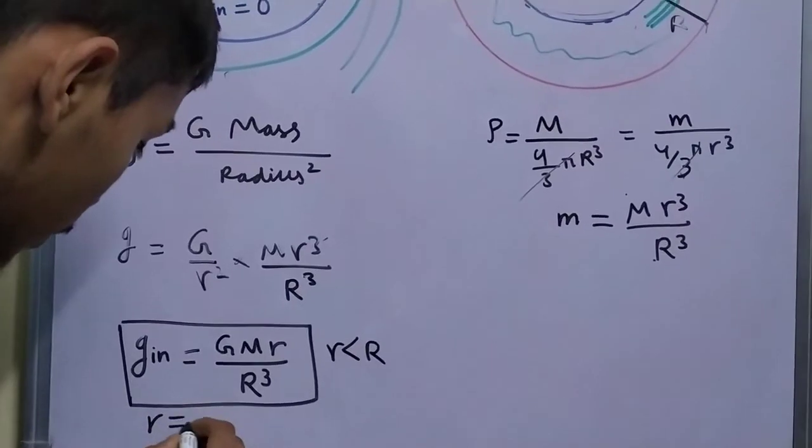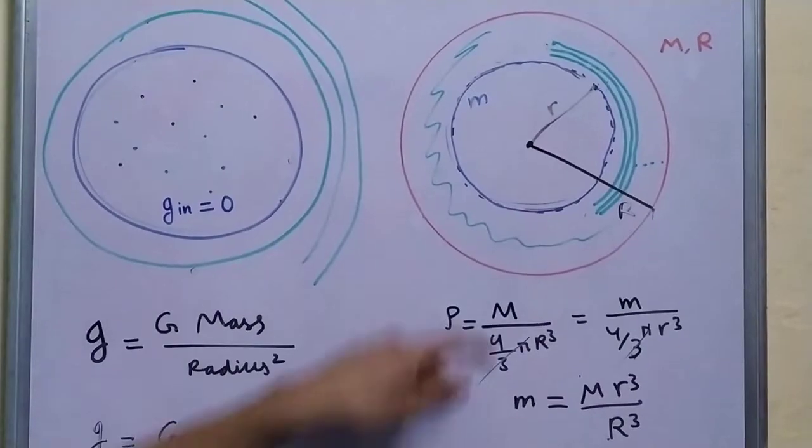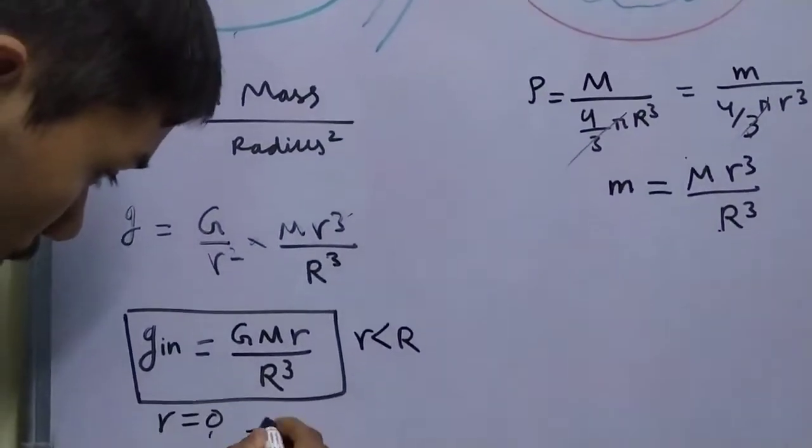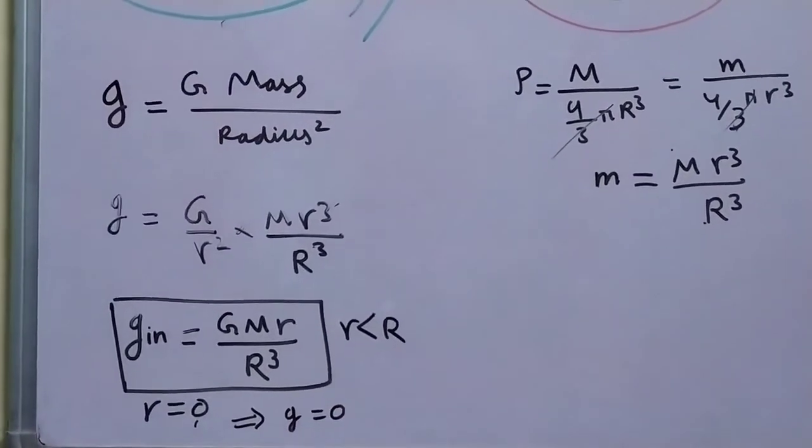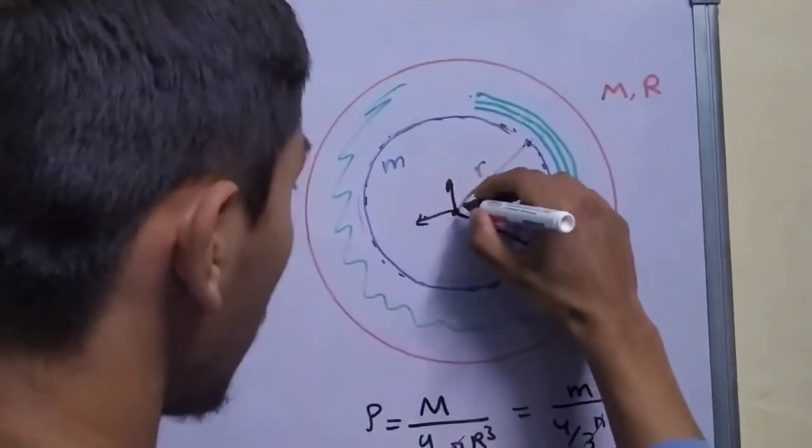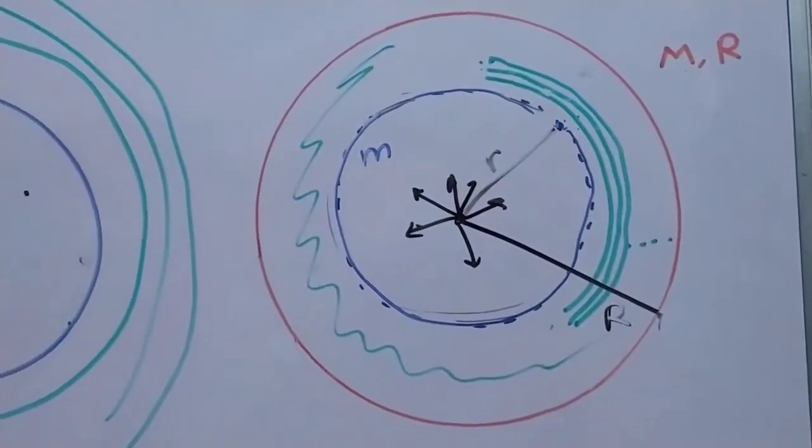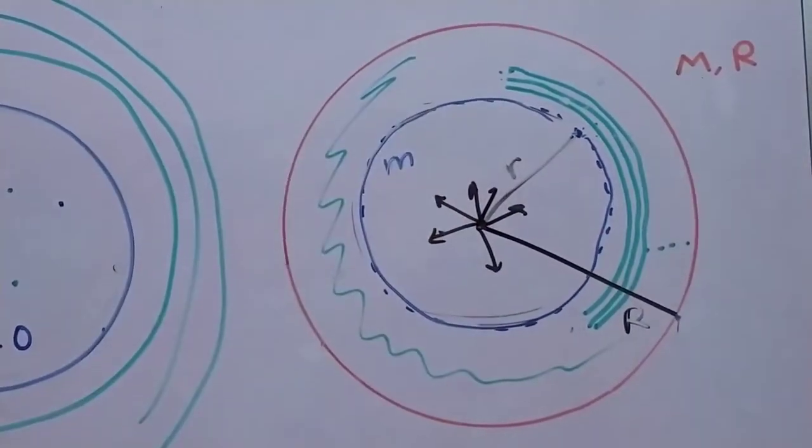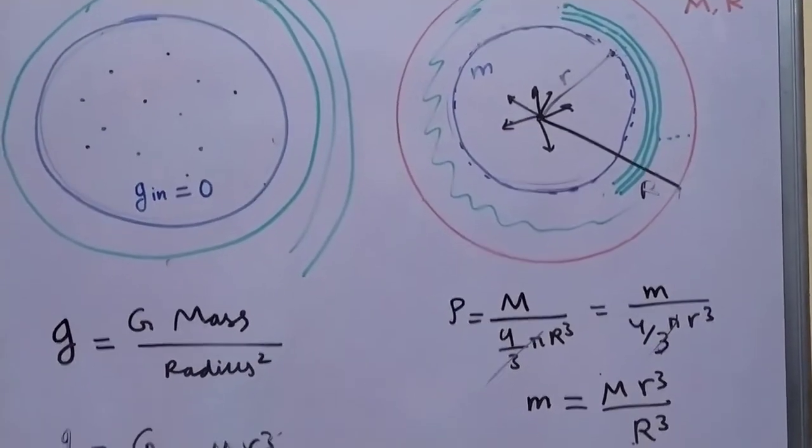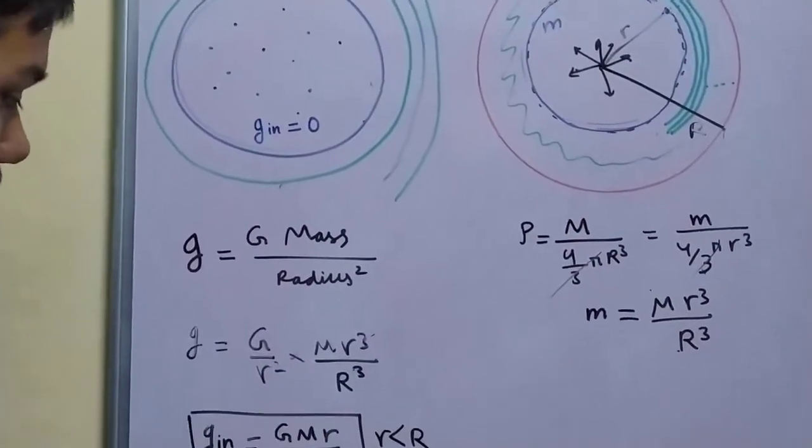If you put r equal to 0, this means that you are calculating the field right at the center. We put r equal to 0, you get that g is also equal to 0. And this makes sense. This mass is being equally attracted in all directions. So all of these fields cancel out leaving the net field equal to 0.